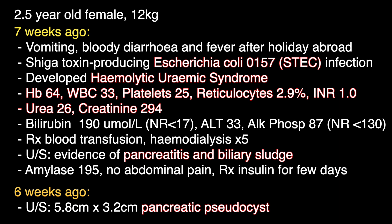The haemoglobin dropped to 64 grams per litre with features of haemolysis, including a raised bilirubin which was predominantly unconjugated, and a raised reticulocyte count. The white cell count was also raised at 33. The platelet levels dropped to 25 with a normal INR.